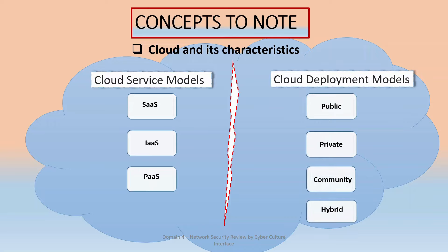We also have cloud deployment models — these are the ways in which cloud systems can be set up for clients' or organizations' use. We can have a public cloud, set up for public access like those from Google and Microsoft. Then we have private clouds, usually owned by the organization itself. Community clouds are set up for a targeted group of people, maybe a particular discipline like military or a community of gamers. And then we have hybrid, which is basically a mix of public, private, and community models combined together.